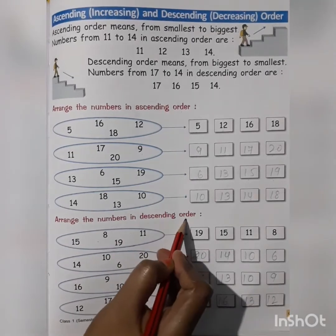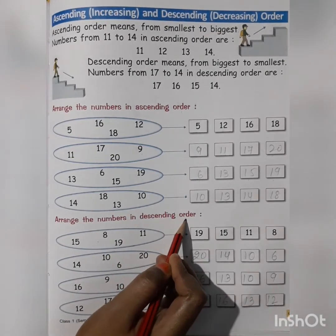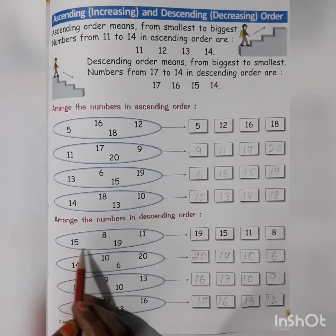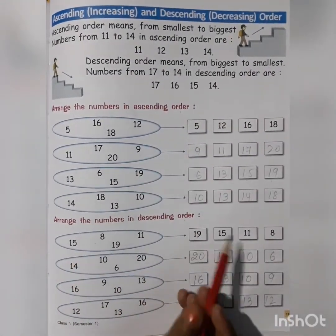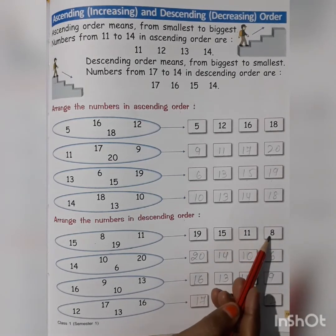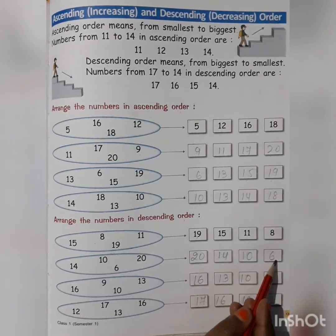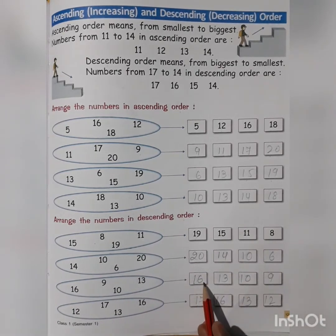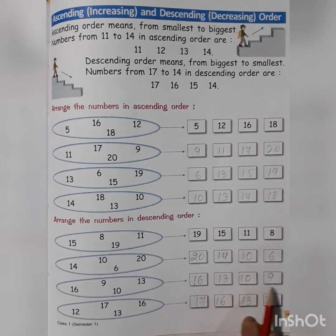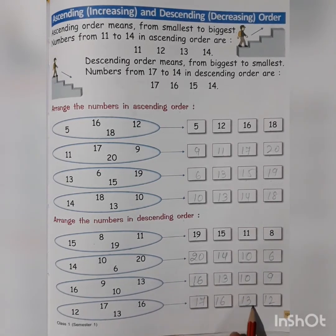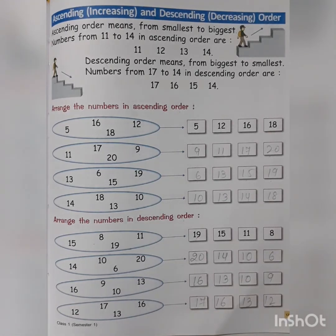Arrange the numbers in descending order — starting from the biggest to the smallest. 19, 15, 11, 8. In this: 20, 14, 10, 6. In this: 16, 13, 10, 9. The last one: 17, 16, 13, 12. So class, we have completed the revision of chapter number 4, numbers up to 20.